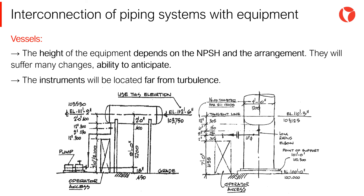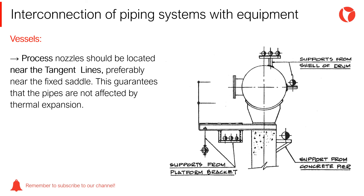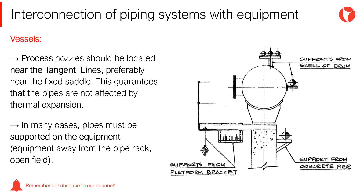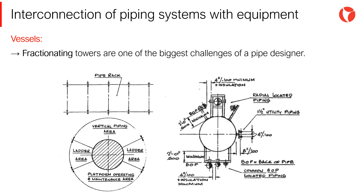Instruments will be located far from turbulence. Process nozzles should be located near the tangent lines of the equipment, preferably near the fixed saddle — this ensures that the pipes are not affected by thermal expansion. In many cases, pipes must be supported on the equipment, for example when the equipment is away from the pipe rack or installed in open field. Vertical equipment such as fractionating towers are generally more complex when it comes to piping design. Fractionating towers represent one of the greatest challenges for a piping designer, mainly due to the process requirements, the number of pipes and nozzles, and the limited space in the equipment.